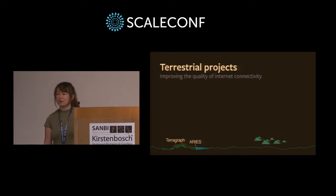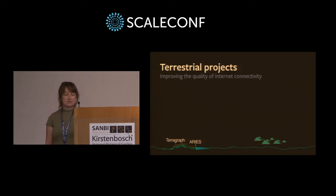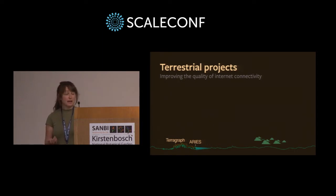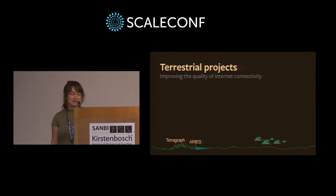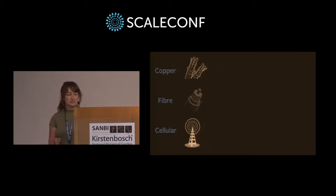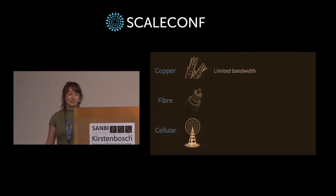I'm going to start by talking about two terrestrial projects: TerraGraph and ARIES, both of which aim to improve the speed, efficiency, and quality of internet connectivity. In the developing world, mobile operators are often unable to achieve speeds better than 2G, while in the developed world, WiFi and LTE infrastructure is unable to keep up with the growth caused by consumption of video and images at higher and higher resolutions. Generally, internet is provided via copper or fiber optic cables, or through cellular base stations. Copper has limited bandwidth due to its physical nature, and while fiber offers several gigabits of data transfer speed, the cables are expensive and cumbersome to lay, requiring digging up the earth.